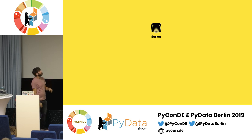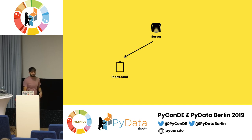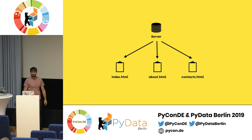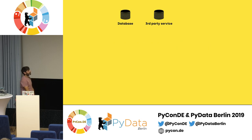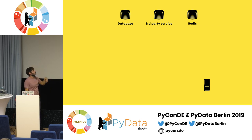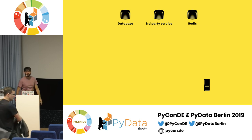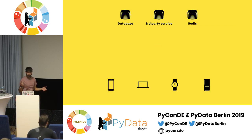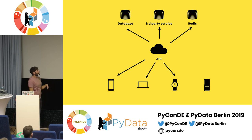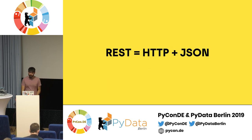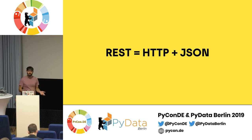Just to recap, this is something that we used to have previously. We had the server returning a bunch of documents and maybe some static files, like CSS and images. But then we start building applications, even on the web, so we start building APIs. We have a bunch of data sources, like a database, third-party services, maybe some caching, and then we have a bunch of clients that need to talk with these services. So we start building an API to connect them together. The most common way of doing this is REST, even today. REST is a simple design architecture where you use HTTP and JSON to exchange data between one or more backends and one or more clients.